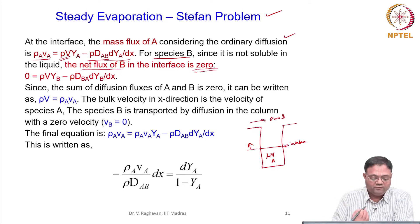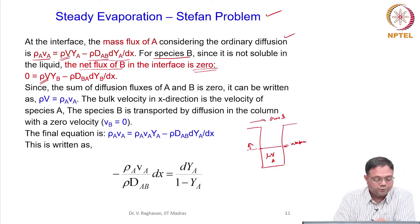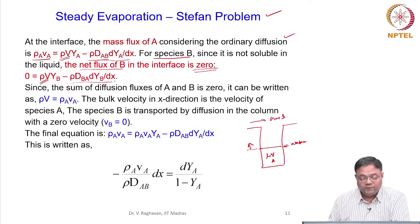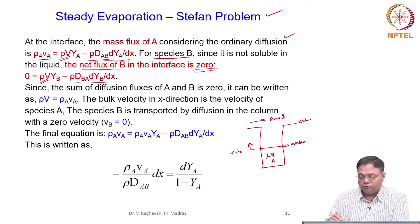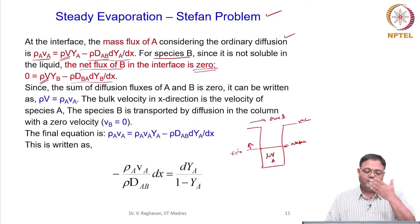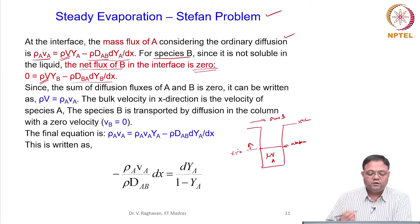We can see how B is transported: bulk flow rho * V * Y_B plus the gradient of Y_B. Y_B at x equal to L, which is the top of the tube — x equals 0 is at the interface — so at x equal to L, Y_B will be higher and reduces towards x equal to 0. That will trigger the transport of B.